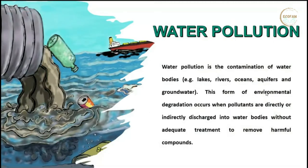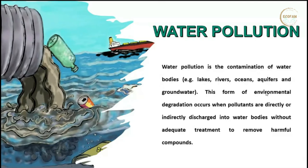Water pollution is defined as degradation of the quality of water. The quality of water is categorized by three parameters: physical properties, chemical properties, and biological properties. If these properties deviate from the normal range, water is considered polluted. It is defined as degradation of water quality due to addition of organic, inorganic, biological, or radioactive substances, or physical factors like heat, which increases water temperature making it unfit for aquatic organisms.